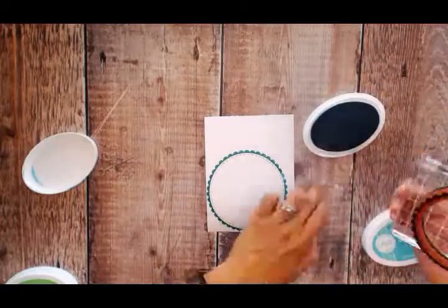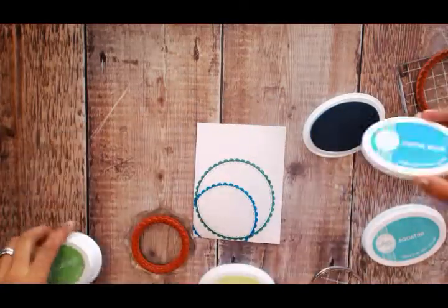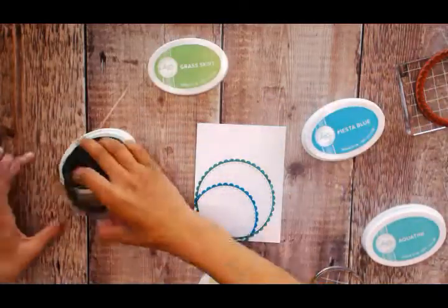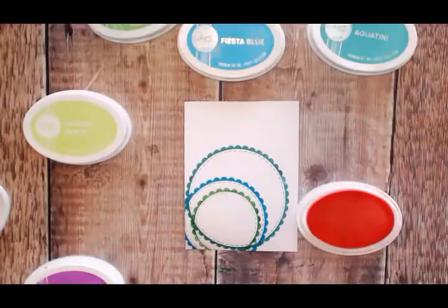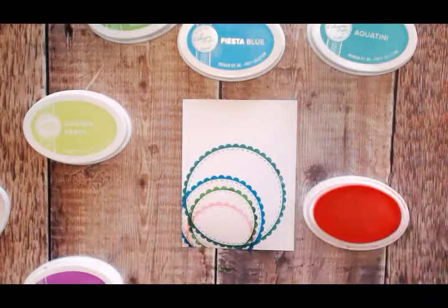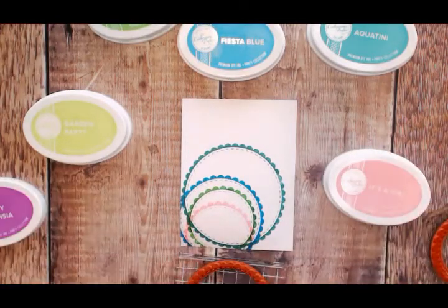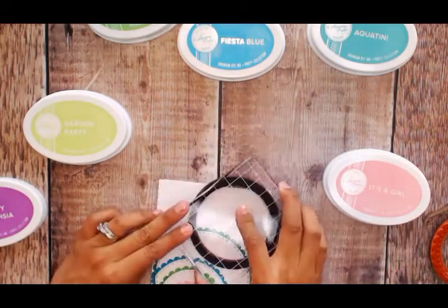Next we're going to move on with Fiesta Blue, then with Grass Skirt, which is a dark green. Now we're going to use some pink with the smaller circle, and then coming back with a medium-sized circle.